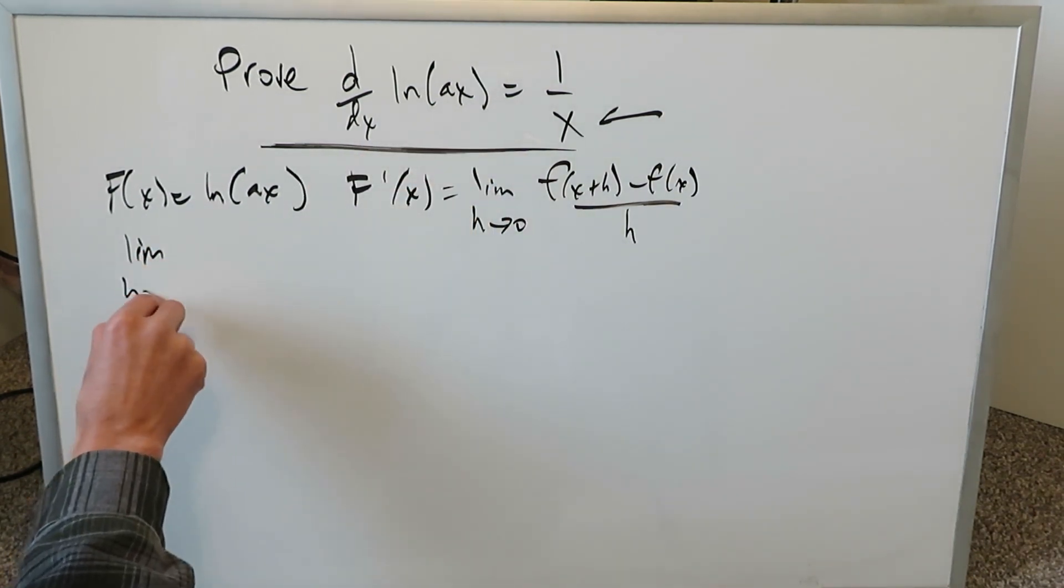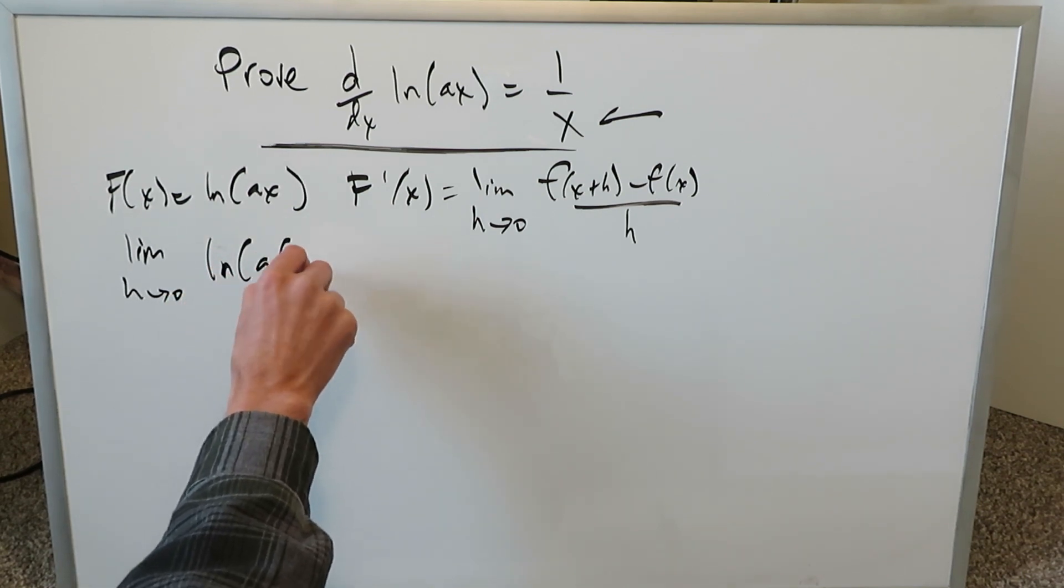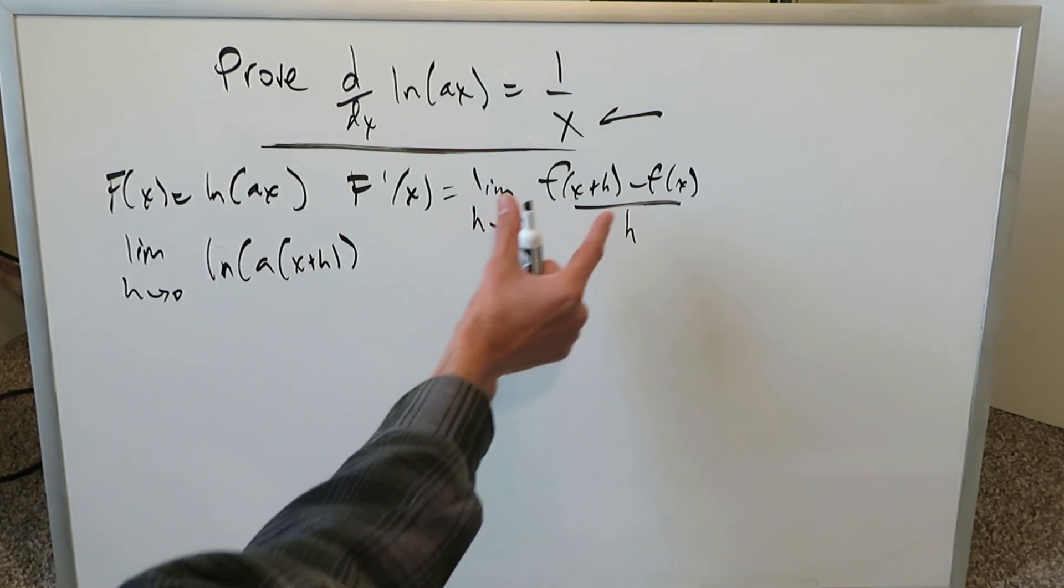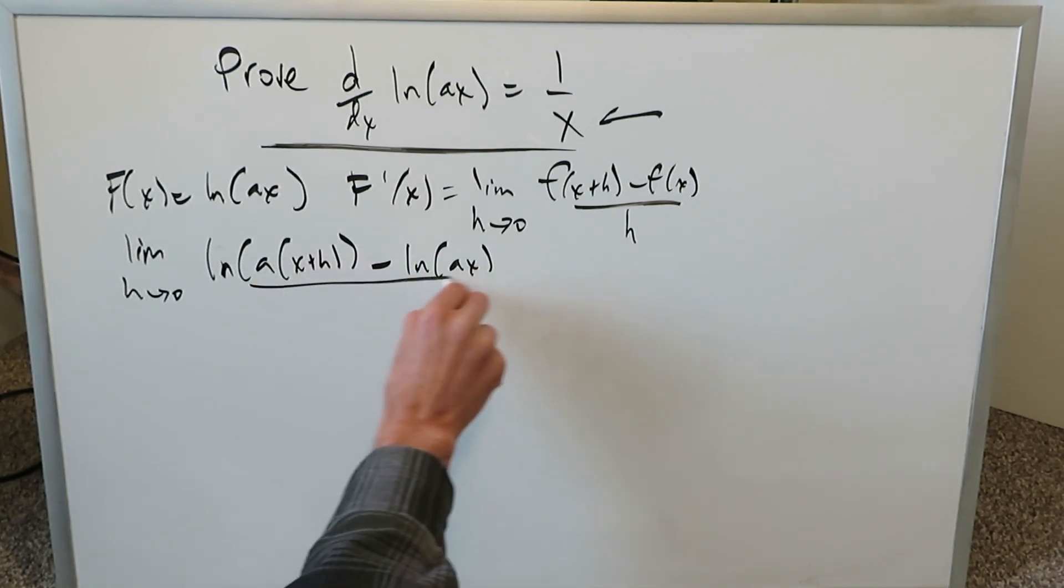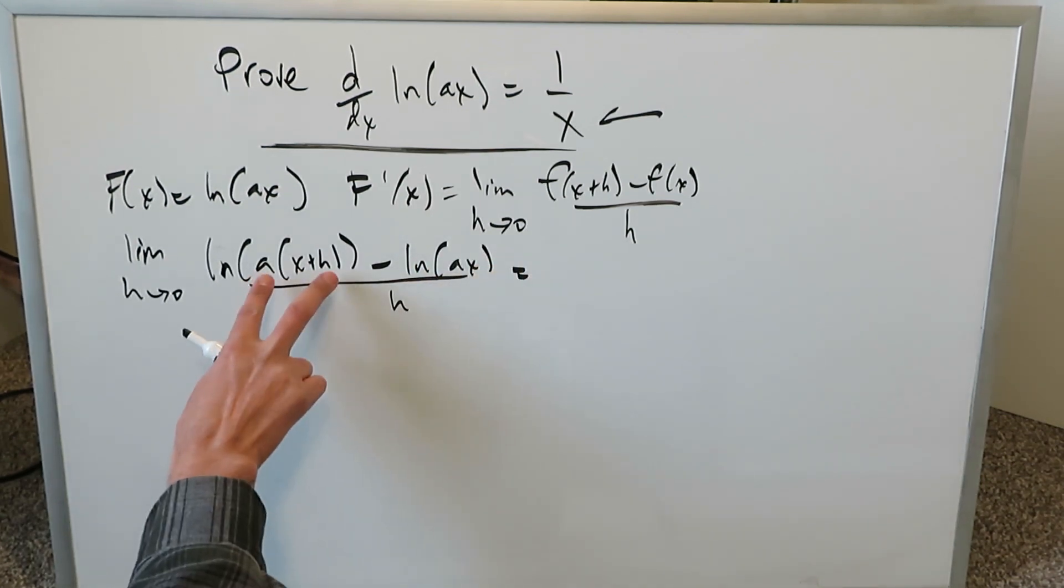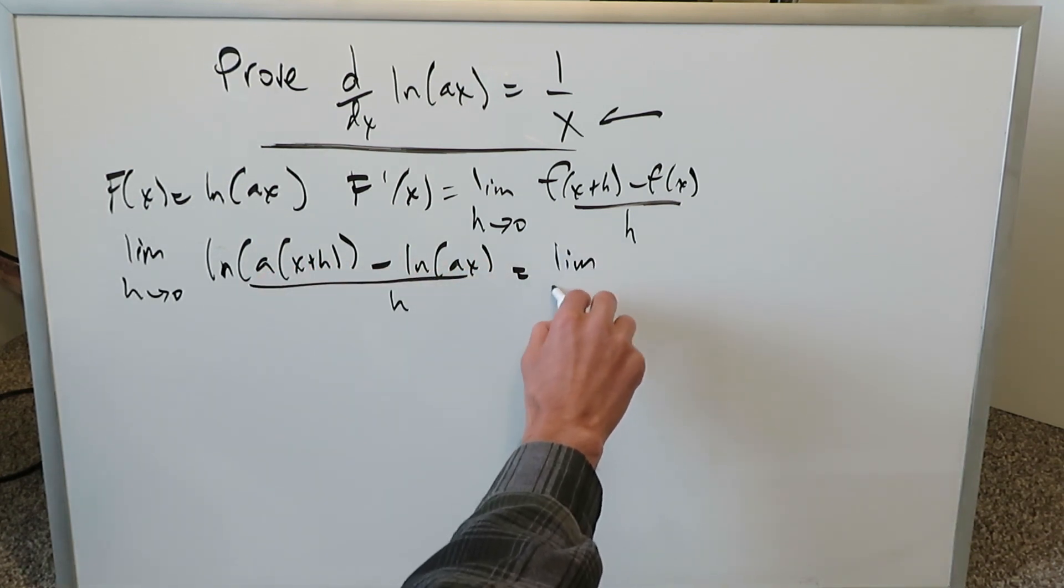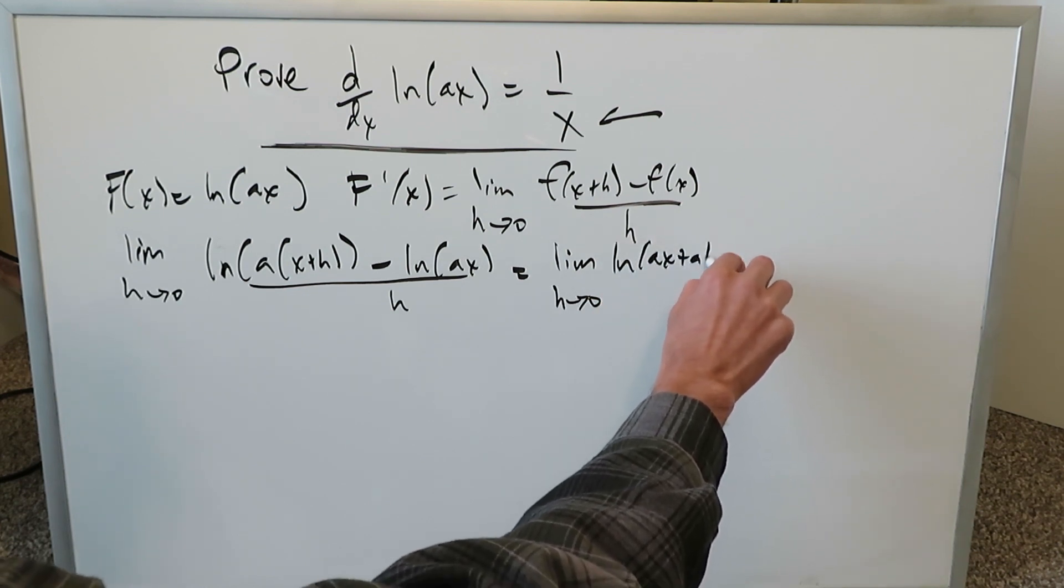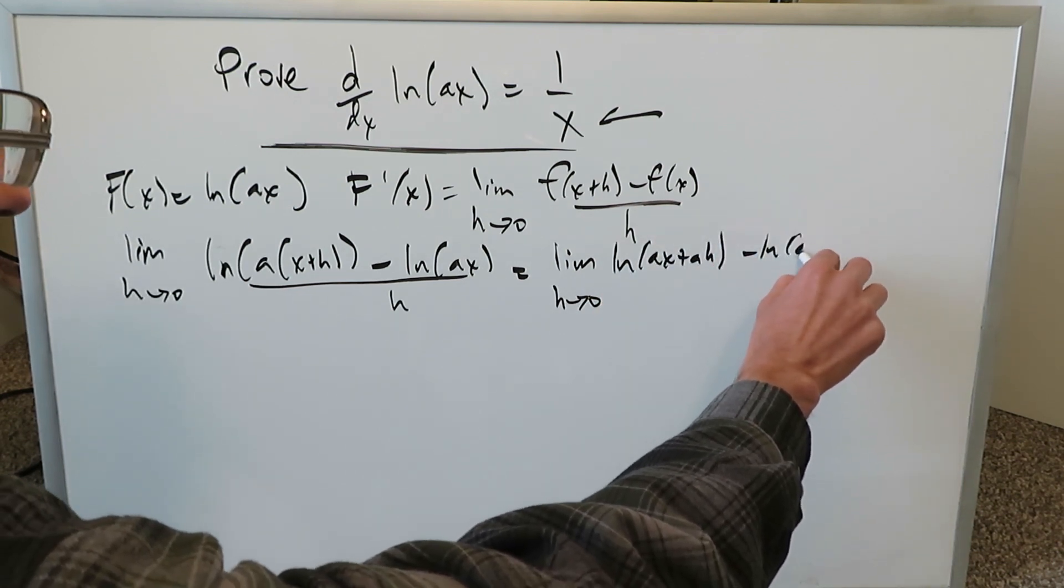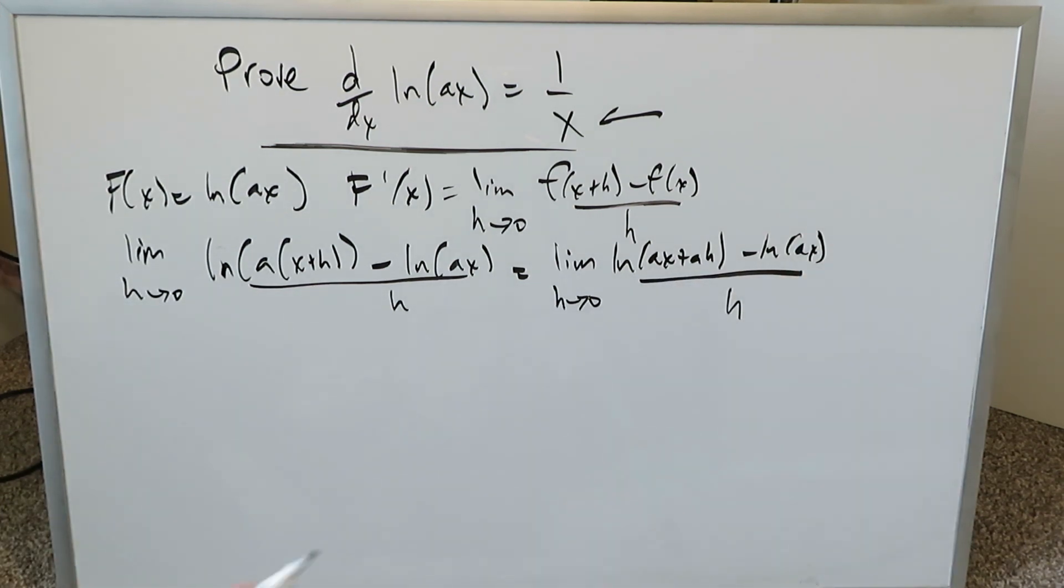And then we proceed here and we continue onwards. We'll have natural log a(x plus h). This right here is that first part then minus natural log ax all over h. You could very well simplify this all. You'll have limit h approaching 0. You have ln(ax plus ah) minus ln(ax) all over h. Use the properties of natural logs.